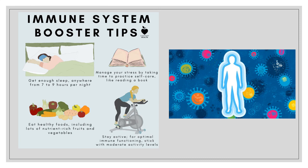To boost your immune system, you should get good sleep — seven to nine hours per night. Manage your stress by practicing self-care, like reading a book. Have a healthy diet including lots of nutrient-rich fruits and vegetables, and stay active with moderate activity levels for optimal immune functioning.